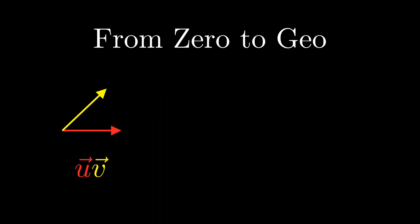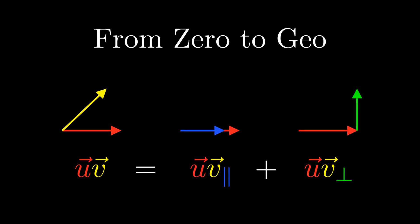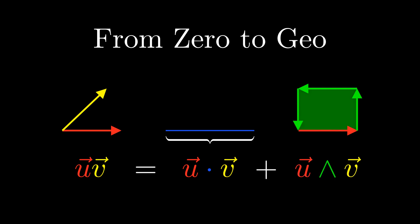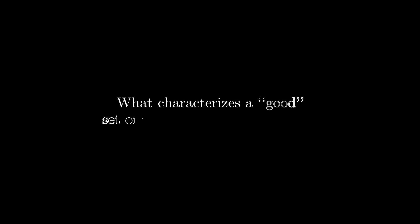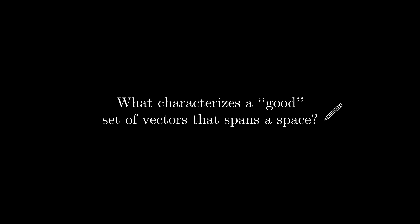This video is a part of From Zero to Geo, a series where we formulate geometric algebra, an incredibly powerful branch of mathematics, from the ground up. So the question that we are going to answer is this: what characterizes a good set of vectors that spans a space? This is a very open-ended problem, and there are many ways you can answer this. In this video, we will be focusing on one important property that sets of vectors can have. See if you can figure out any way to answer this question yourself before continuing.